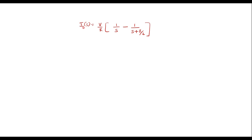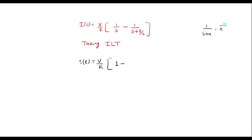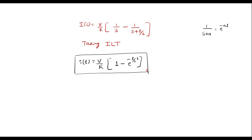Now to find I of t we take the inverse Laplace transform. I of t is equal to V by R, which is a constant, times the inverse Laplace transform of 1 over S, which is 1, minus the inverse Laplace transform of 1 over S plus R by L, which is e to the power minus R by L times t. So the final answer is I of t equal to V by R times the quantity 1 minus e to the power minus R·t by L. Thank you for watching.